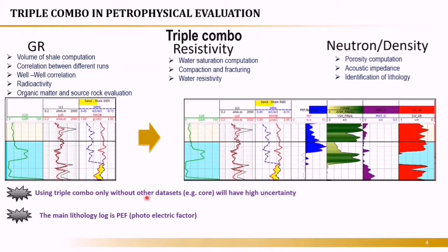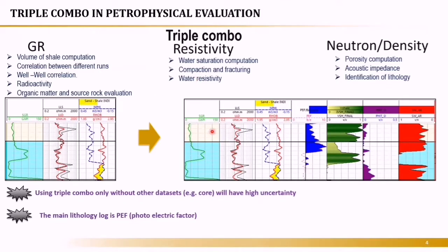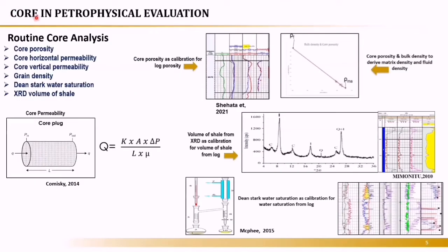Using triple combo only without other datasets will have high uncertainty. When using the triple combo for petrophysical analysis, expect some elevated uncertainty. You need a calibration of your interpretation. How do you do the calibration? By using the core. The core is an important function in petrophysical evaluation, either as conventional core or special core, for calibrating your interpretation.